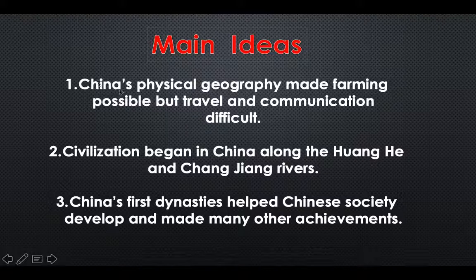The first main idea is that China's physical geography made farming possible, but travel and communication difficult — and we'll see why that's the case shortly. The second main idea: civilization began in China along the Huanghe and Changjiang rivers.